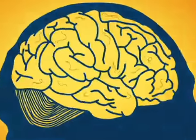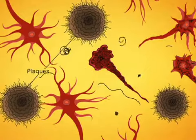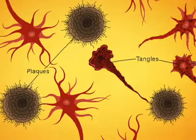The disease comes on gradually as two abnormal protein fragments, called plaques and tangles, accumulate in the brain and kill brain cells.